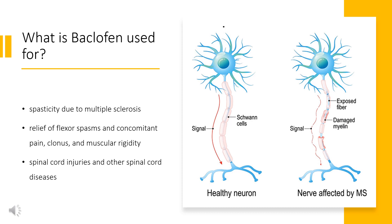The medicine is the alternative in cases where oral therapy is not efficient, or in patients who experience intolerable central nervous system side effects at effective doses. For use in spasticity because of traumatic brain injury, Baclofen should be considered after at least one year of injury.